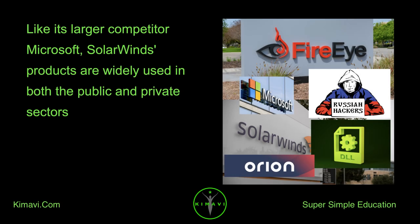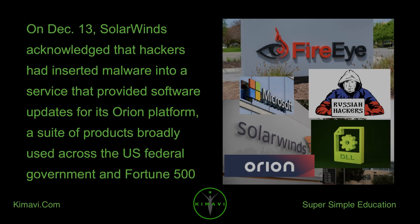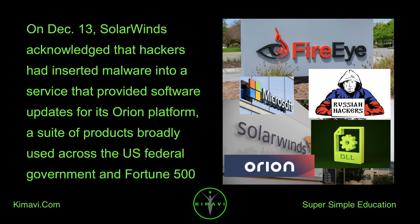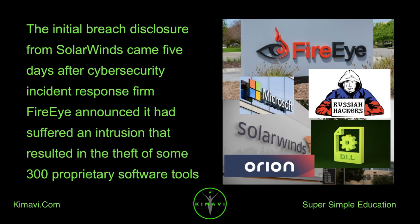Like its larger competitor Microsoft, SolarWinds products are widely used in both the public and private sectors. Almost all Fortune 500 companies are reported to use SolarWinds products to scan their networks, including major defense contractors such as Boeing. On December 13, SolarWinds acknowledged that hackers had inserted malware into a service that provided software updates for its Orion platform — a suite of products broadly used across the U.S. federal government and Fortune 500 firms to monitor the health of their IT networks. The initial breach disclosure came five days after cybersecurity firm FireEye announced it had suffered an intrusion resulting in the theft of some 300 proprietary software tools.